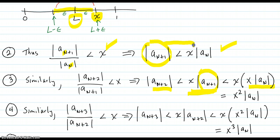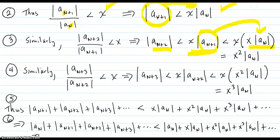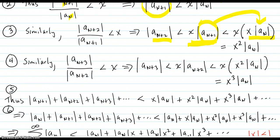So this means that this term here is less than x times x times absolute value of a_n. You see, this is less than this one, and that substitutes in to become this. And that equals x squared times. So what we're doing here is building up a geometric series. So then, one more time. Similarly,